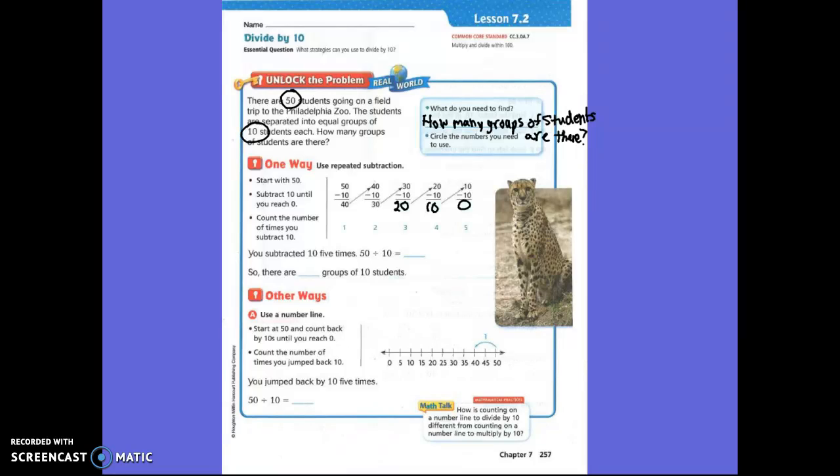We are subtracting until we get to zero, and then we cannot subtract anymore because we can't take away from zero. Count the number of times you subtracted by ten. How many times did you subtract? Five times. You subtracted ten five times, so fifty divided by ten has to be? Five. So how many groups of ten students were there? Five.